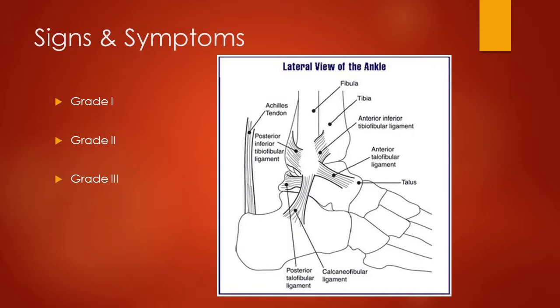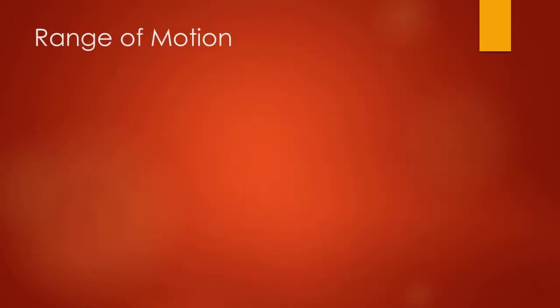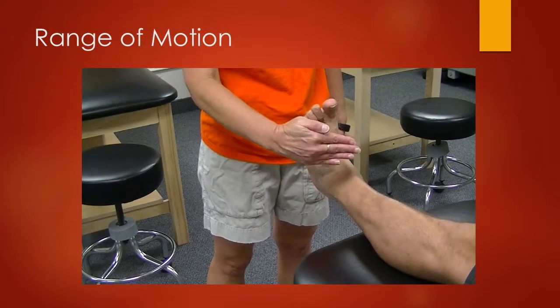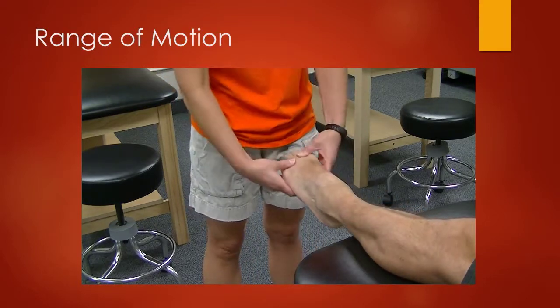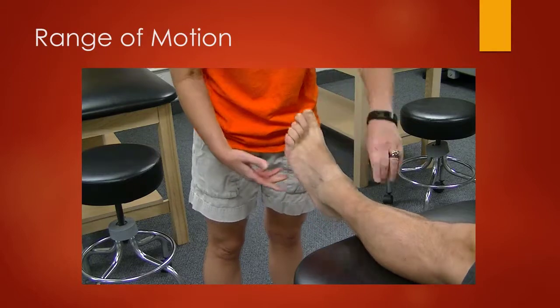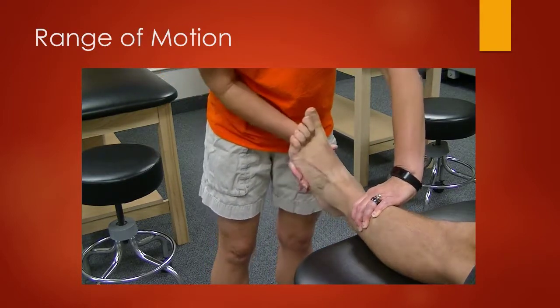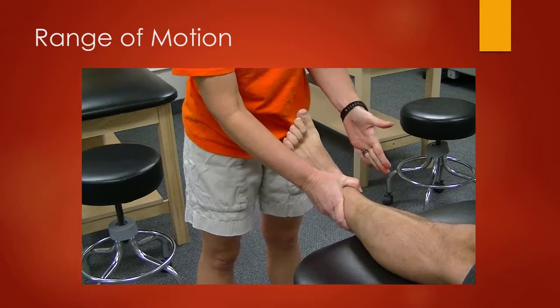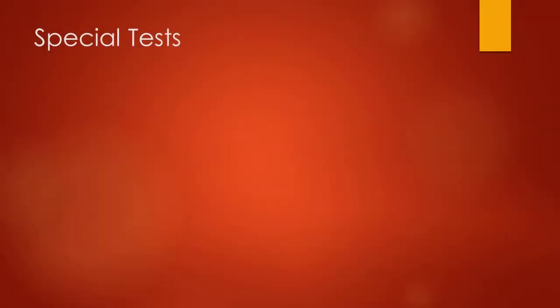In all three ankle sprain grades, ecchymosis is usually going to occur 24 to 48 hours post-injury. Range of motion-wise, you will see decreased active and passive range of motion for both dorsiflexion and plantar flexion, as well as inversion and eversion.